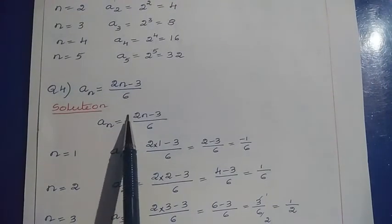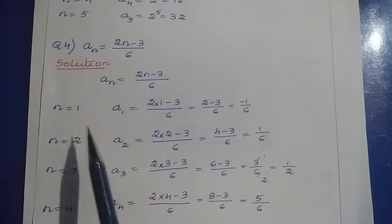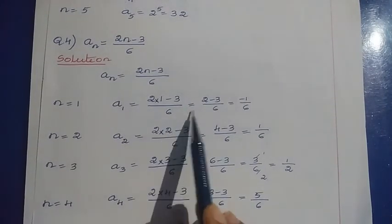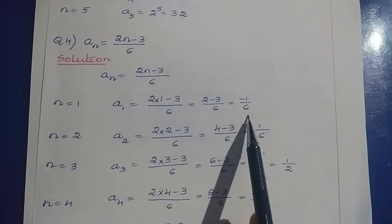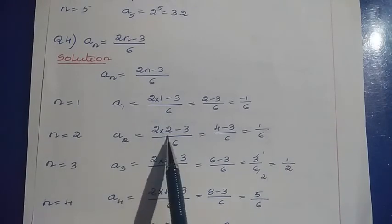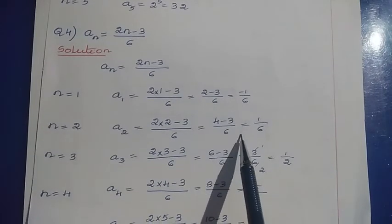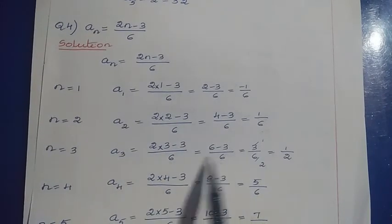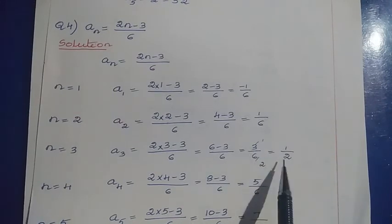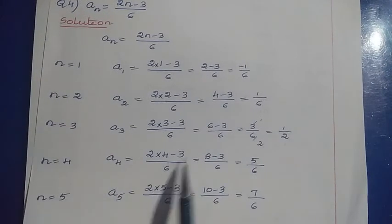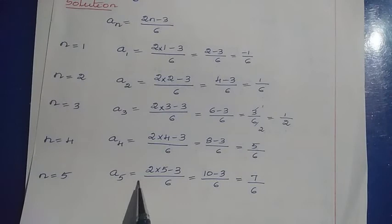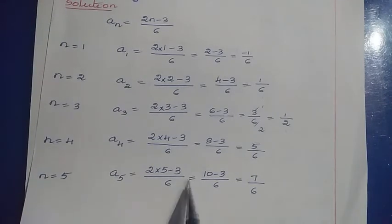Question 4: aₙ = (2n − 3) / 6. We have to find the first 5 terms. For n = 1: a₁ = (2×1 − 3)/6 = (2 − 3)/6 = −1/6. For n = 2: a₂ = (2×2 − 3)/6 = (4 − 3)/6 = 1/6. For n = 3: a₃ = (2×3 − 3)/6 = (6 − 3)/6 = 3/6 = 1/2. For n = 4: a₄ = (2×4 − 3)/6 = (8 − 3)/6 = 5/6. For n = 5: a₅ = (2×5 − 3)/6 = (10 − 3)/6 = 7/6.